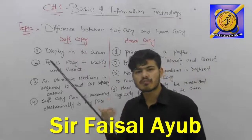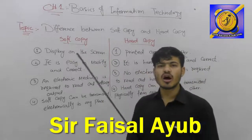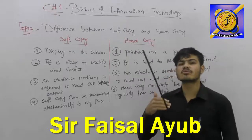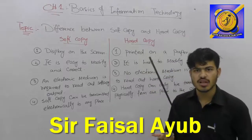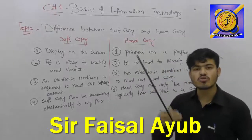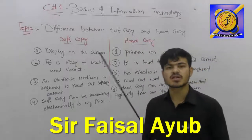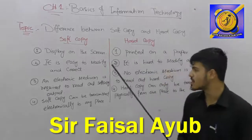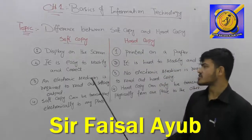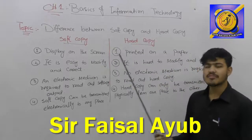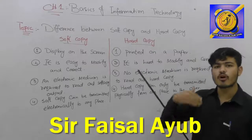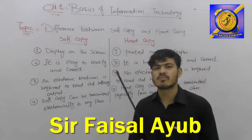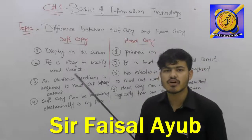Hard copy is not changeable — once printed, you cannot easily alter it. Soft copy, on the other hand, is easily changeable. It exists on electronic media such as a computer.